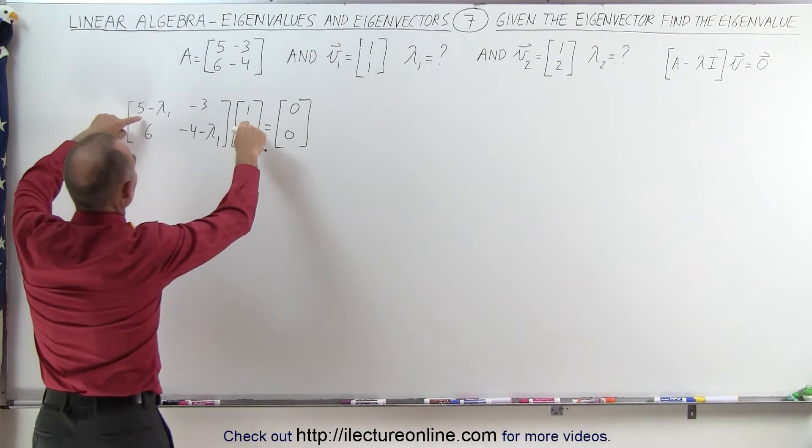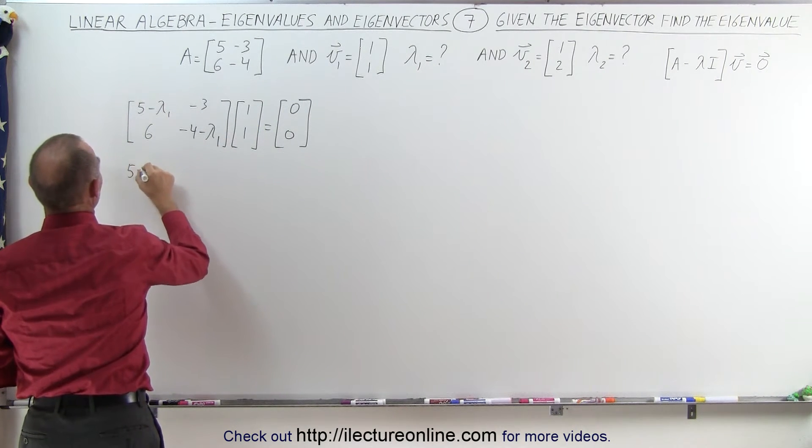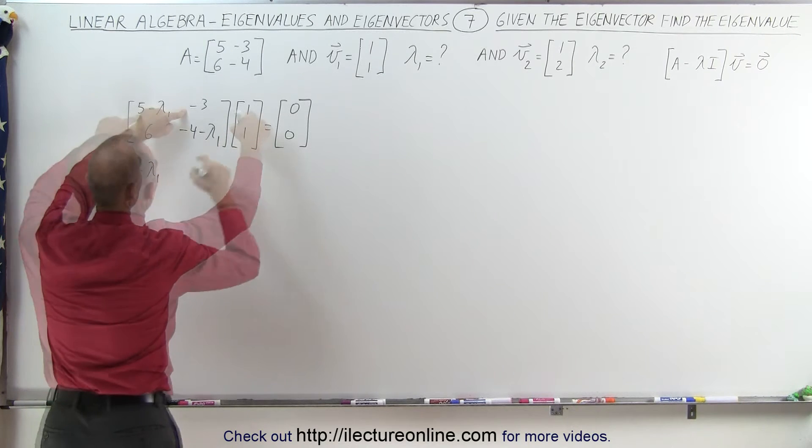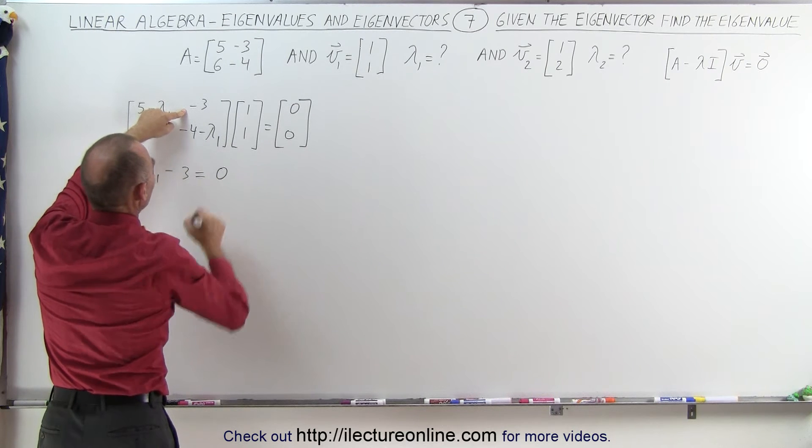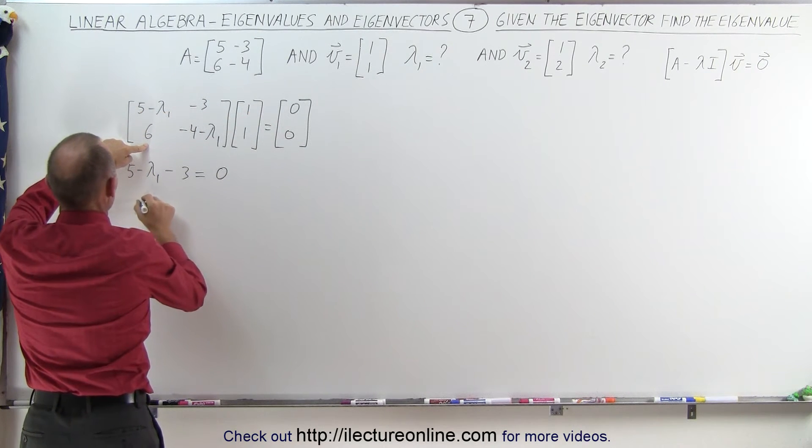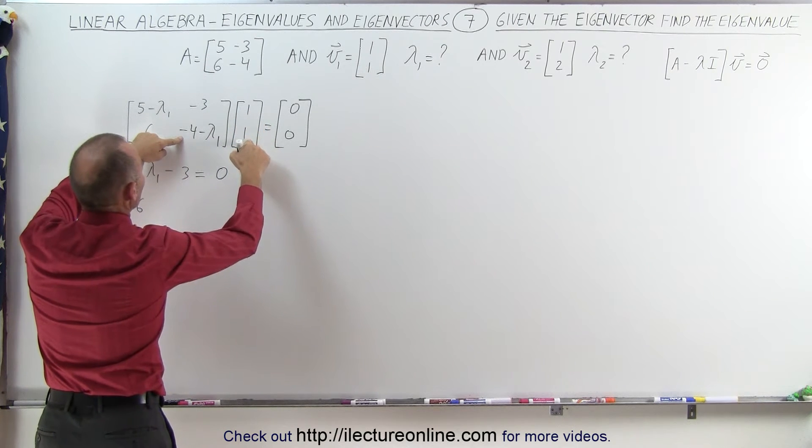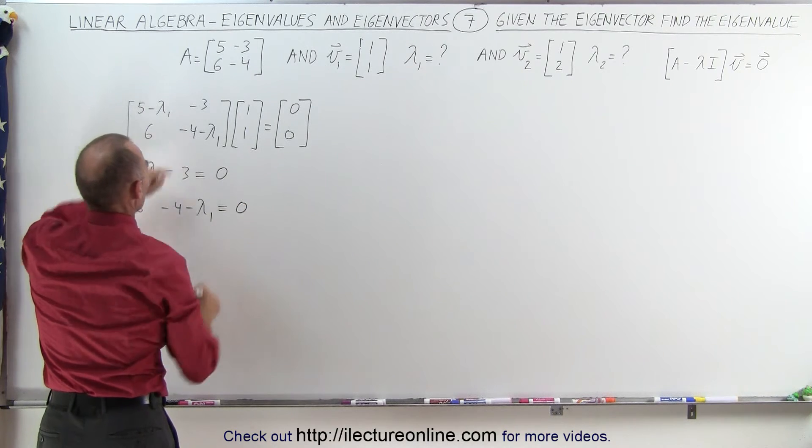Let's cross multiply and multiply this times this, so we get 5 minus λ₁ minus 3 times 1, that equals 0. The second equation is derived by multiplying this times this: 6 times 1, which is 6, and then minus 4 minus λ₁, and that also equals 0.